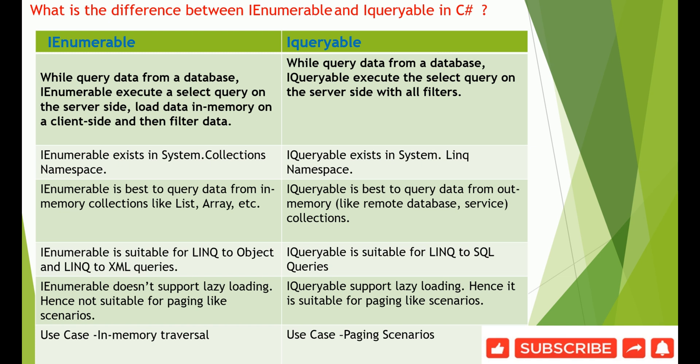So use IEnumerable when performing in-memory traversal operations, and use IQueryable when the use case involves paging scenarios. The first and most fundamental difference is that IEnumerable operates in-memory while IQueryable executes queries on the server side. Thanks for watching.